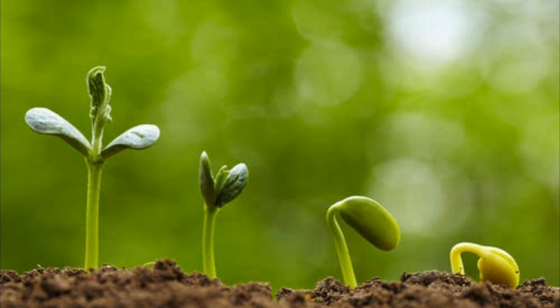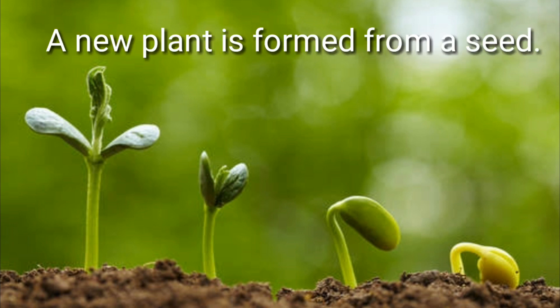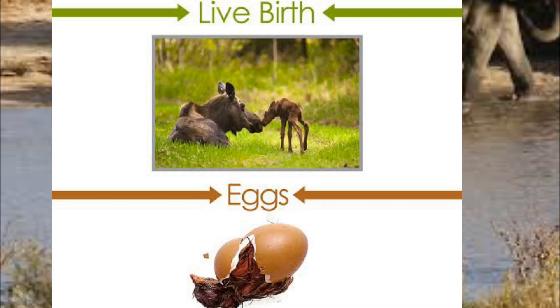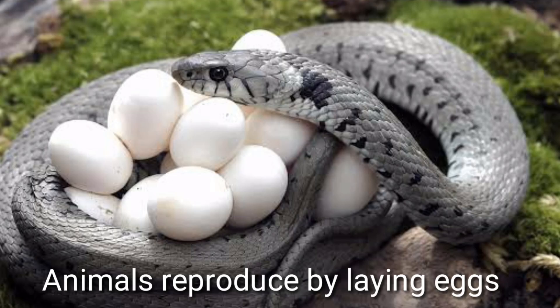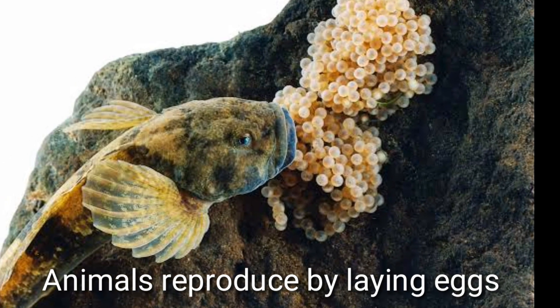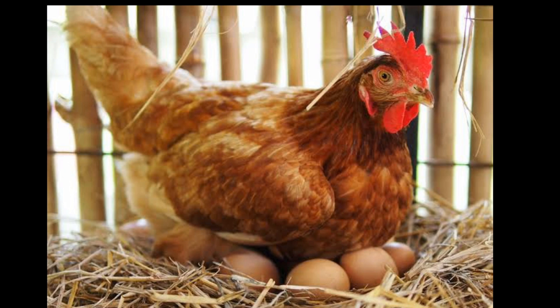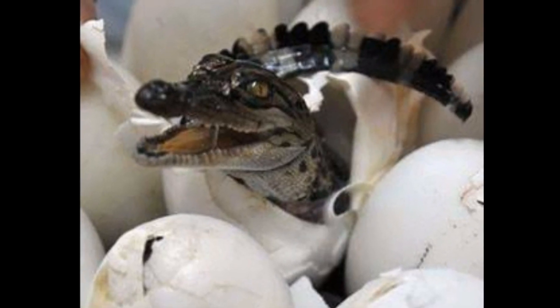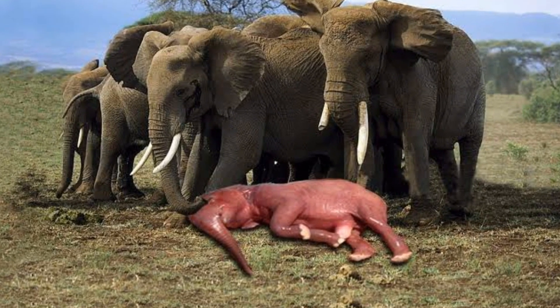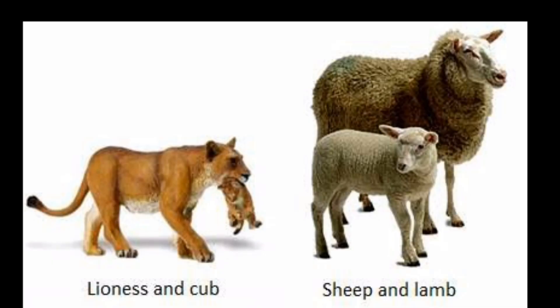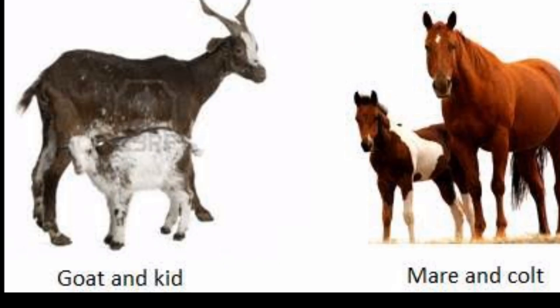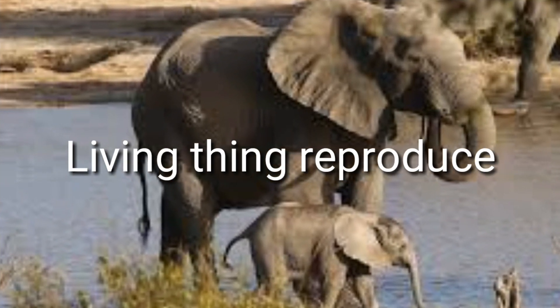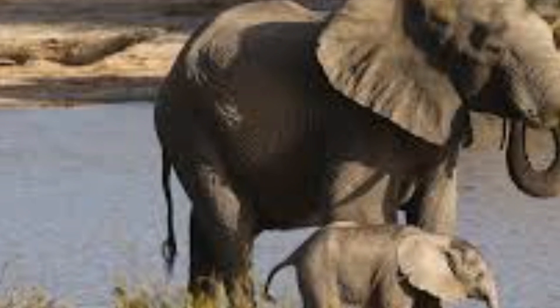The other way of reproduction in plants is through seeds, which is part of sexual reproduction. Animals reproduce either by laying eggs or by giving birth to babies. Reptiles, birds, and fishes lay eggs and the young ones hatch out. Whereas mammals like cows, elephants, and human beings give birth to babies directly. The babies look almost similar to the adults. So we can say leaving things reproduce whereas non-leaving things do not.